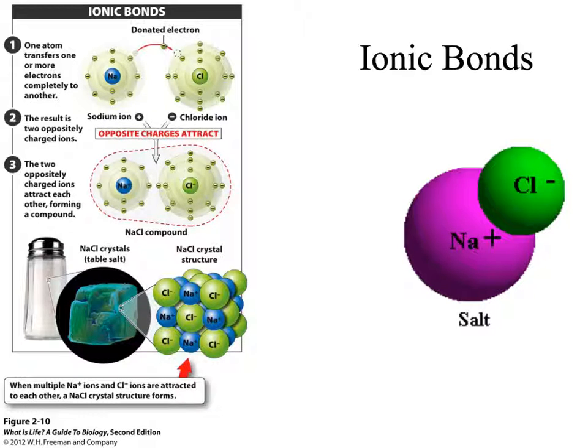So, positively charged sodium is attracted to negatively charged chlorine. When we put sodium chloride ions together in large quantities, they actually arrange themselves quite neatly into salt crystals.